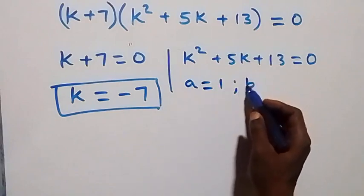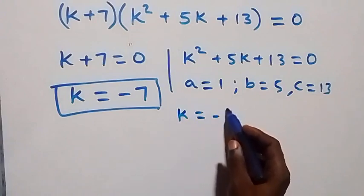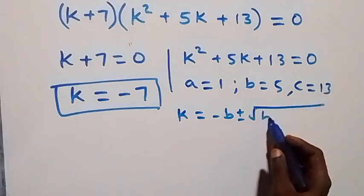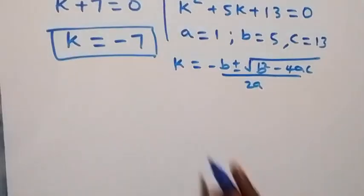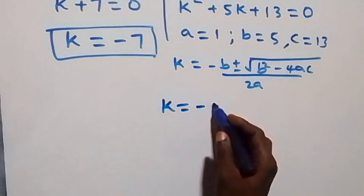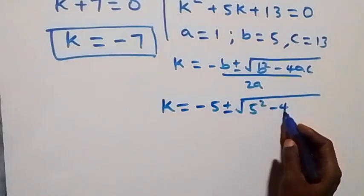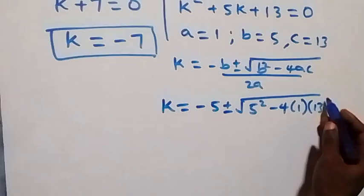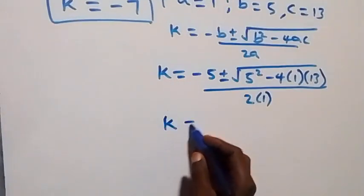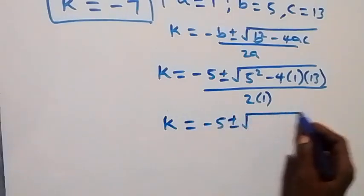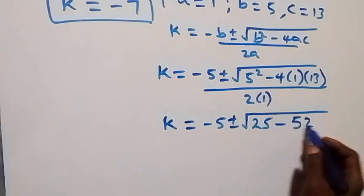For the quadratic k squared plus 5k plus 13 equals zero, we have a equals 1, b equals 5, and c equals 13. Using the quadratic formula, k equals minus b plus or minus square root of b squared minus 4ac over 2a, we get k equals minus 5 plus or minus square root of 25 minus 52, over 2.